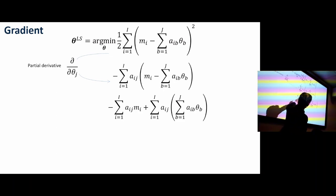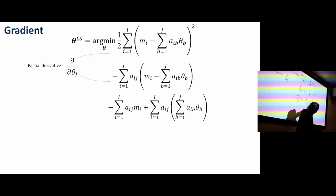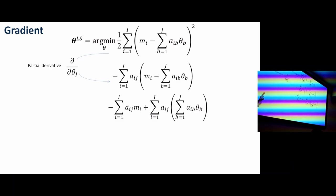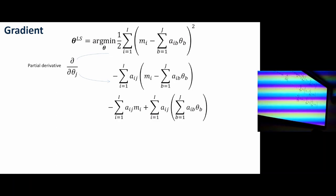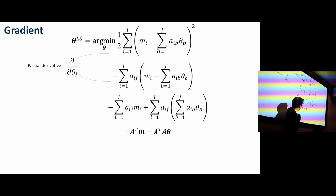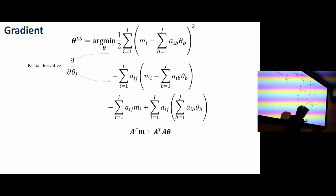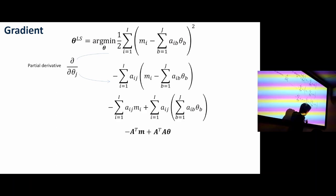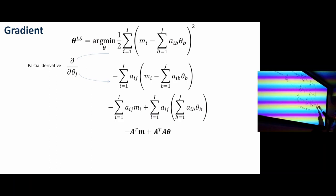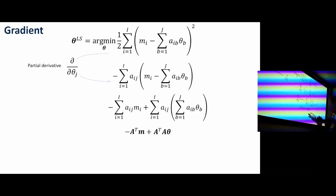Rearranging that expression: minus sigma_i A_ij m_i, plus sigma A_ij with that term — minus minus is a plus. You should be experts in translating this into matrix vector form. Summing down the rows of matrix i and weighting them with the input vector — that has to be A transpose m. So this is minus A transpose m. Summing down the rows again: using theta as weighting factors for the columns of matrix A is just conventional matrix vector multiplication. So A theta, A transpose on A theta, and this is minus A transpose m.